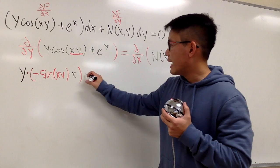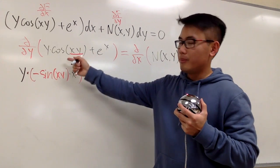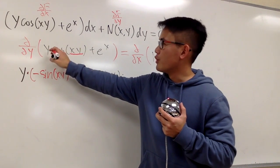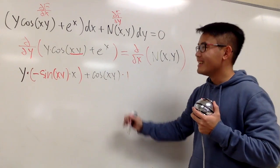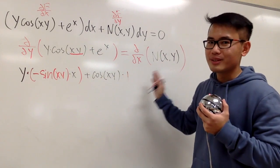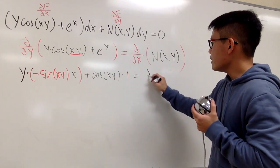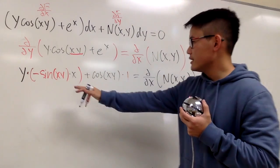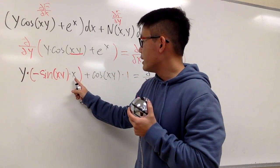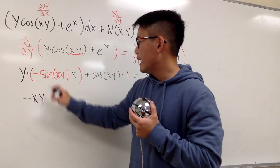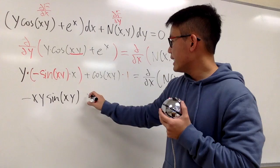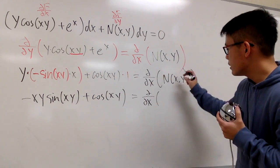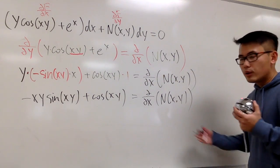And next, we add the second part of the product rule: the second function, which is cosine of xy, multiplied by the derivative of the first. The derivative of y in the y world is just 1. The derivative of e to the x in the y world is just 0, so it doesn't matter. And we set this equal to the partial with respect to x of N(x, y). Let's clean this up: on the left-hand side we have negative xy times sine of xy, plus cosine of xy.